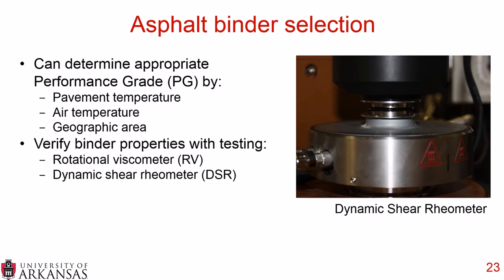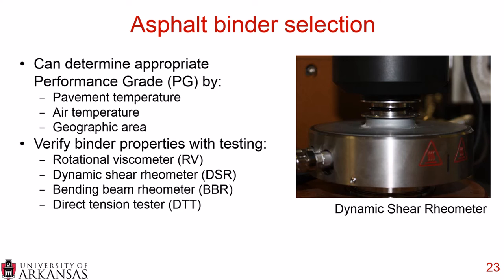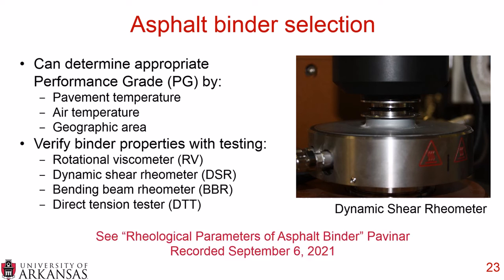You verify your binder properties with testing, which includes rotational viscosity (RV), dynamic shear rheometer (DSR) — which uses two parallel plates — the bending beam rheometer (BBR), and the direct tension tester (DTT). Note that the direct tension tester is very rarely used these days, and the BBR does most of our low temperature binder evaluation. If you want to learn more about asphalt binder properties, the rheological parameters of asphalt binder Pavinar was recorded on September 6th, 2021.